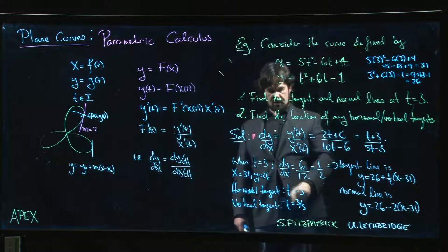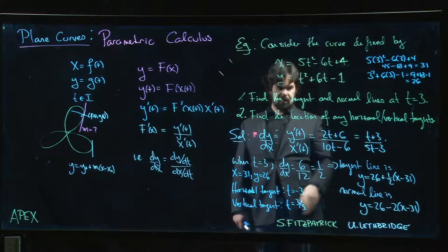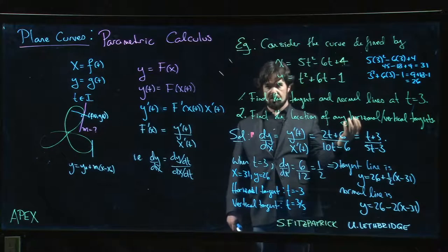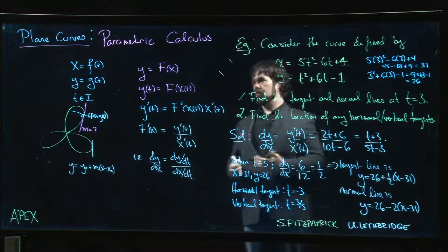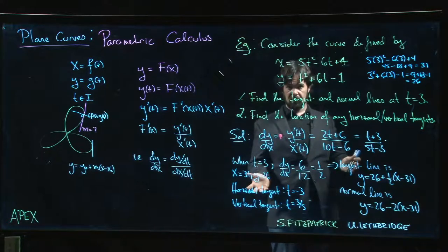Go back up here, plug in t equal to minus 3 to get the x and y coordinates for the horizontal tangent. Plug in t is equal to 3/5 and we'll get the x and y coordinates for that vertical tangent. Those are going to be two points on our graph, and so if we were interested in trying to sketch this thing, those will be important points to include on our sketch.